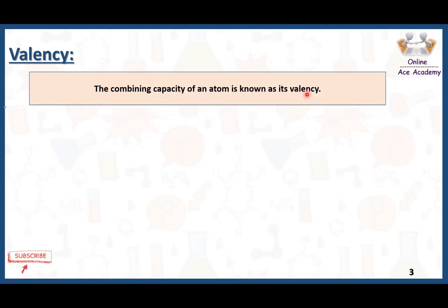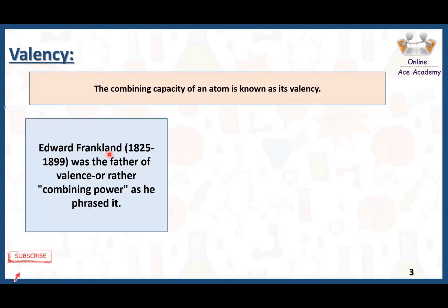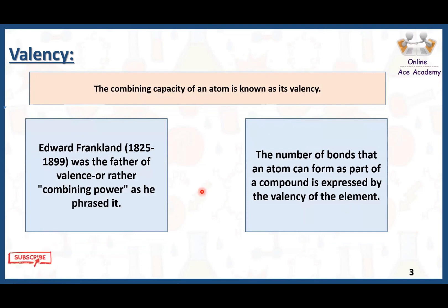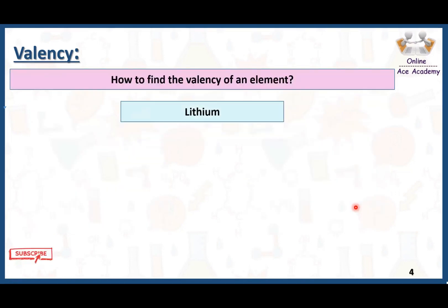The combining capacity of an atom is known as its valency. Edward Frankland was the father of valency, or combining power as he later rephrased it. In other words, the number of bonds that an atom can form as part of a compound is expressed by the valency of an element.